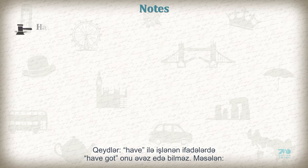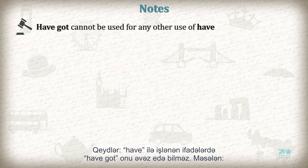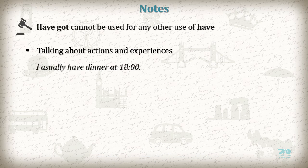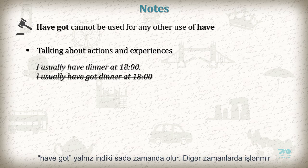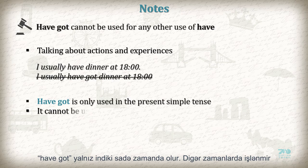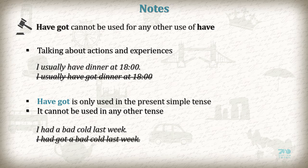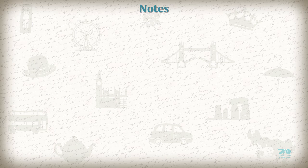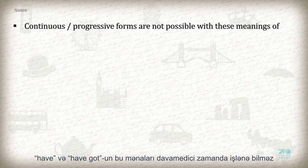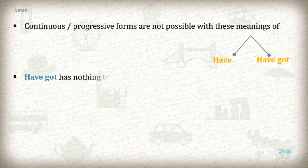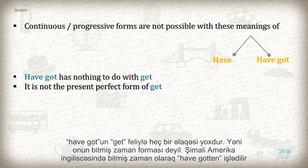Notes. Have got cannot be used for any other use of have, for example, talking about actions and experiences. I usually have dinner at 18:00. Not: I usually have got dinner at 18:00. Have got is only used in the present simple tense; it cannot be used in any other tense. I had a bad call last week. Not: I had got a bad call last week. Continuous forms are not possible with these meanings of have and have got. Have got has nothing to do with get — it is not the present perfect form of get. In North American English, having gotten is the present perfect of get.